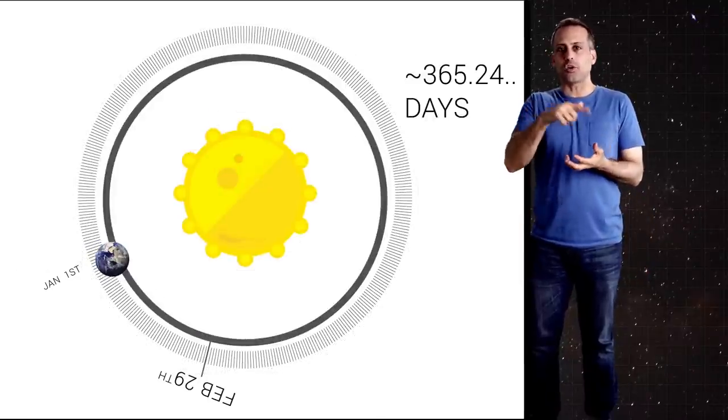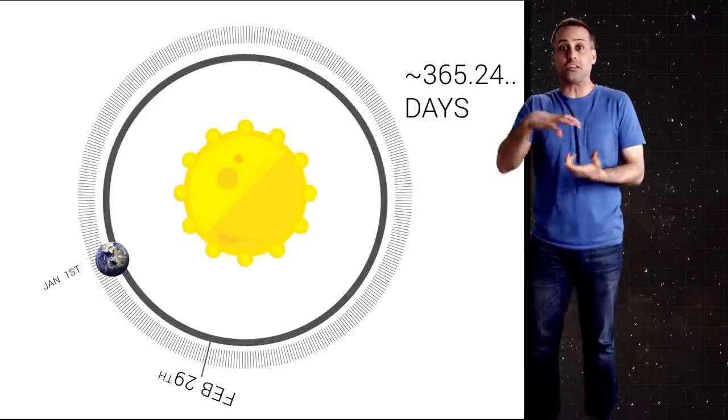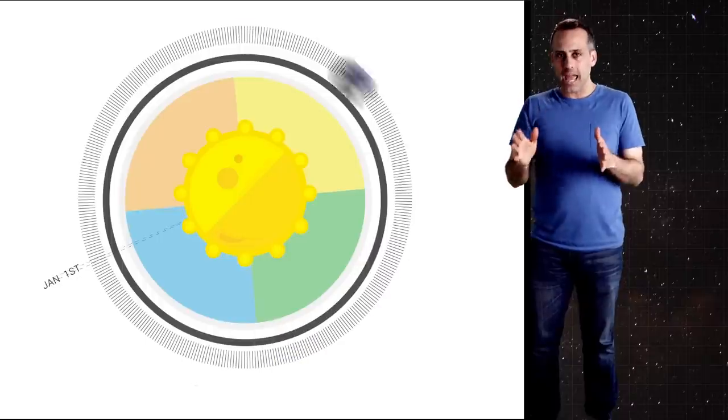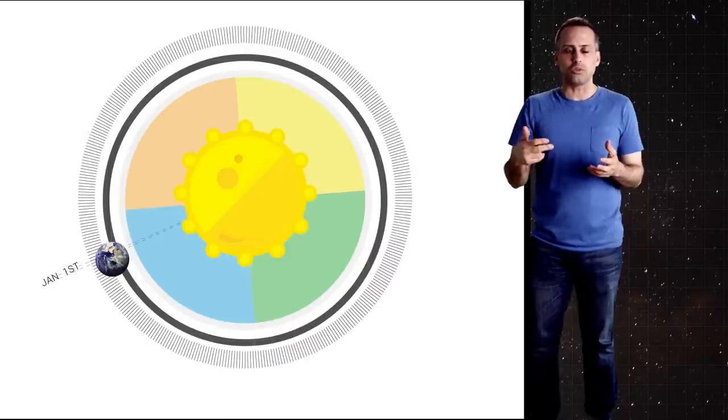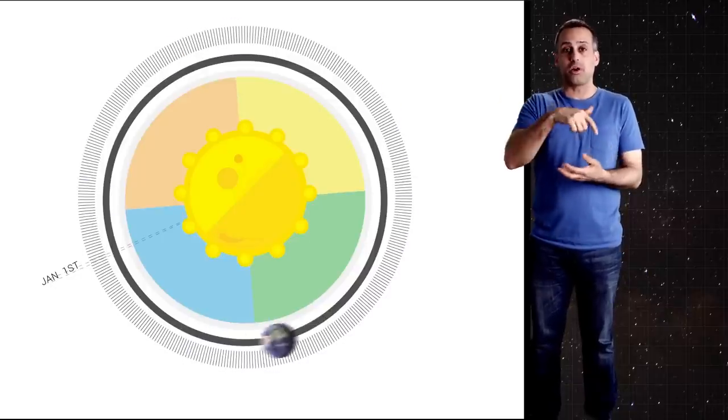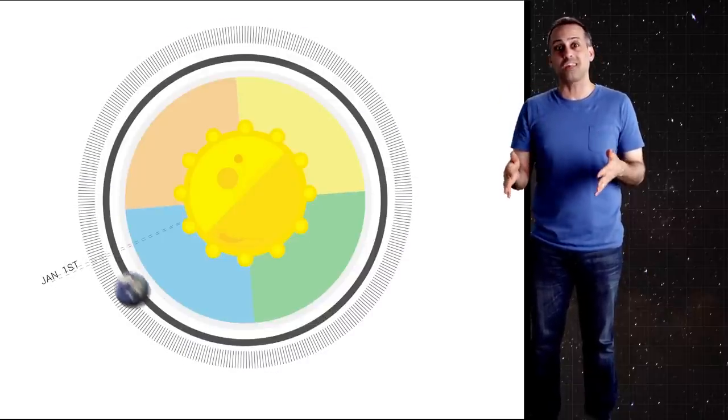But the calendar isn't trying to sync to Earth's orbit, it's trying to sync to the seasons, which backtrack. So the calendar has to be allowed to backtrack by about a day every 70 years or so if it's going to follow the processing equinoxes. We also need a little bit of extra slippage because the annual discrepancy between the calendar and Earth's orbit also isn't precisely six hours.